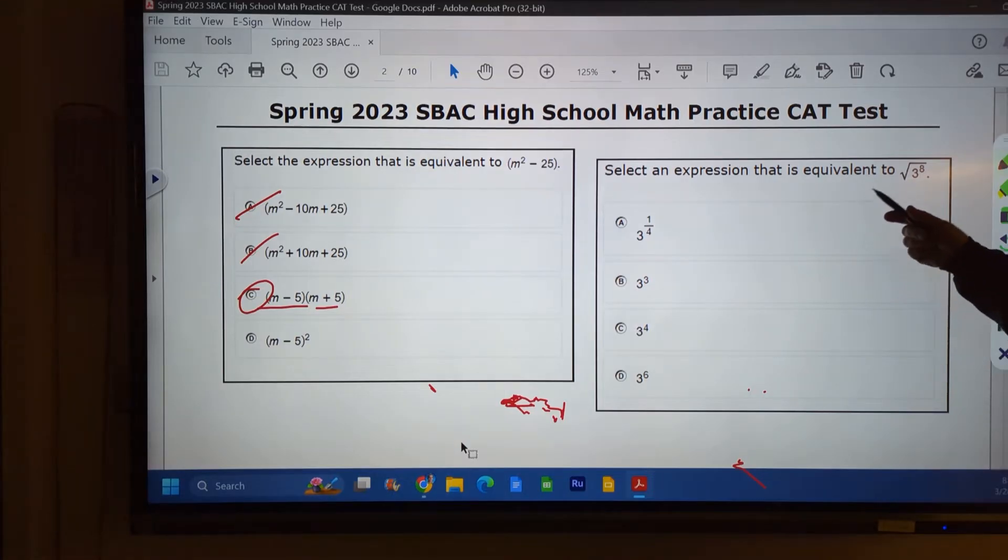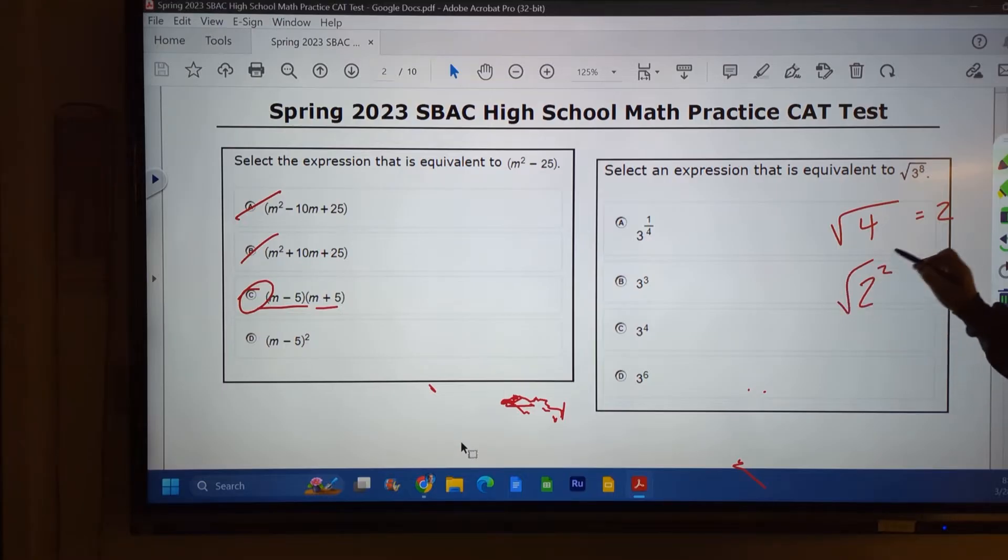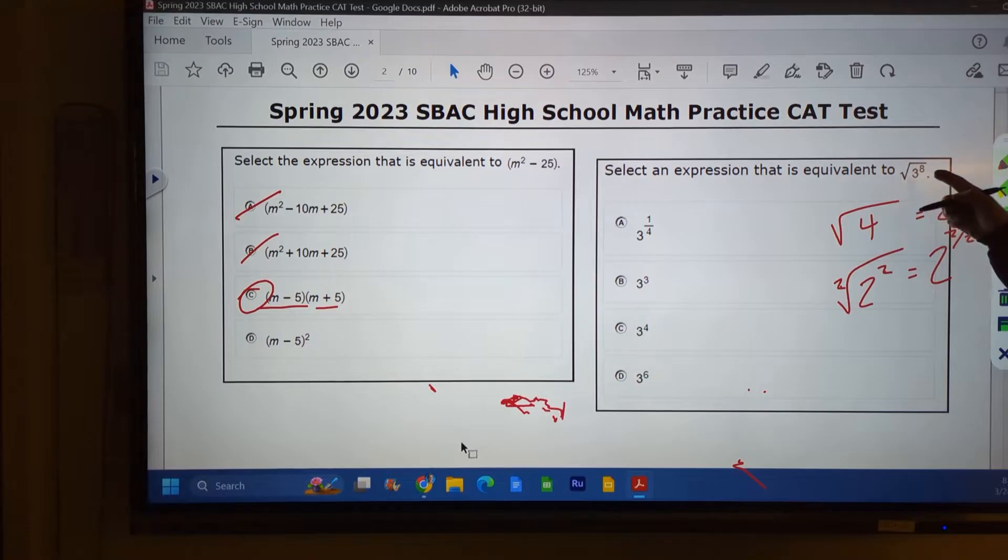Over to number two here. Select an expression that is equivalent to this, the square root of 3 to the 8th. So if you think about it and you don't remember those rules, you could say, well, what's the square root of 4 equal to? Well, you know that's equal to 2. And you could come up with that because 4 is 2 squared and the square root of that is 2 right there. So the way I do this is this is the numerator of the fraction, this is the denominator. So this is equal to 2 over 2 or 2 to the first or 2. So the square root of 4 is 2.